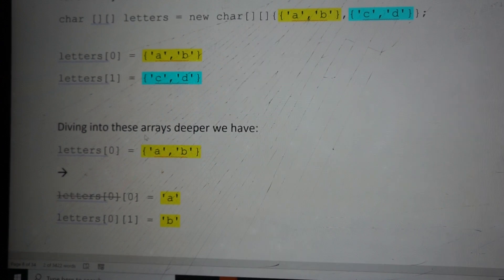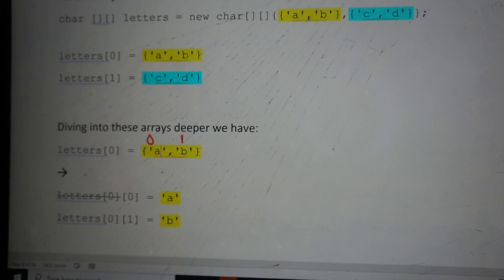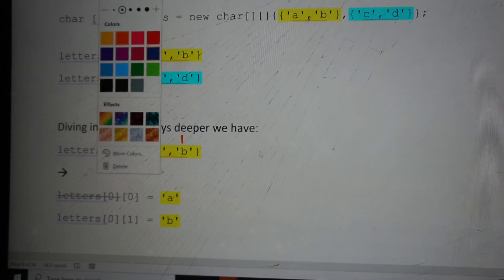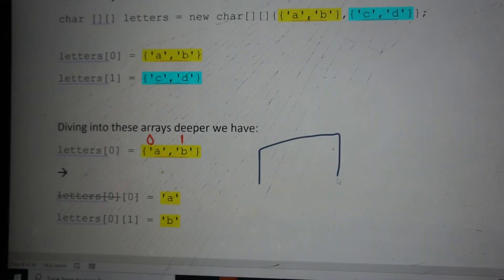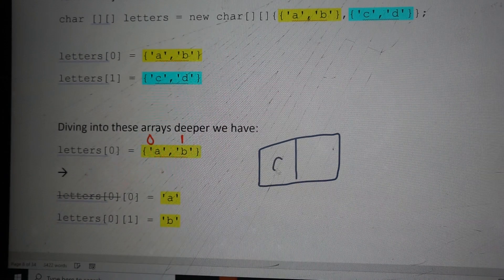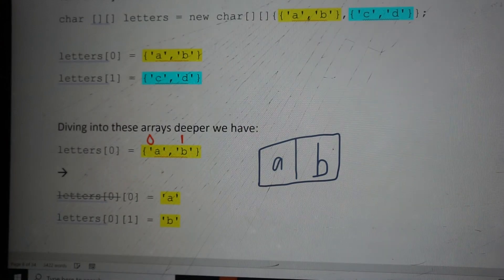Remember in an array, the indexing goes as 0 and 1. We can think of this as a box here. It's just an array and this is AB, and the indexing is 0, 1.